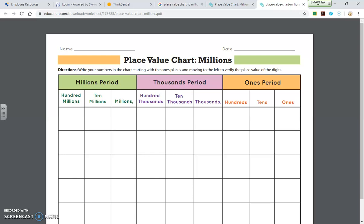So you're all going to have this as a reference to look back as you're doing your homework. And what we can see here is we're using the three periods, the ones period, the thousands period, and the millions period. And within each period, we have the ones, the tens, the hundreds.